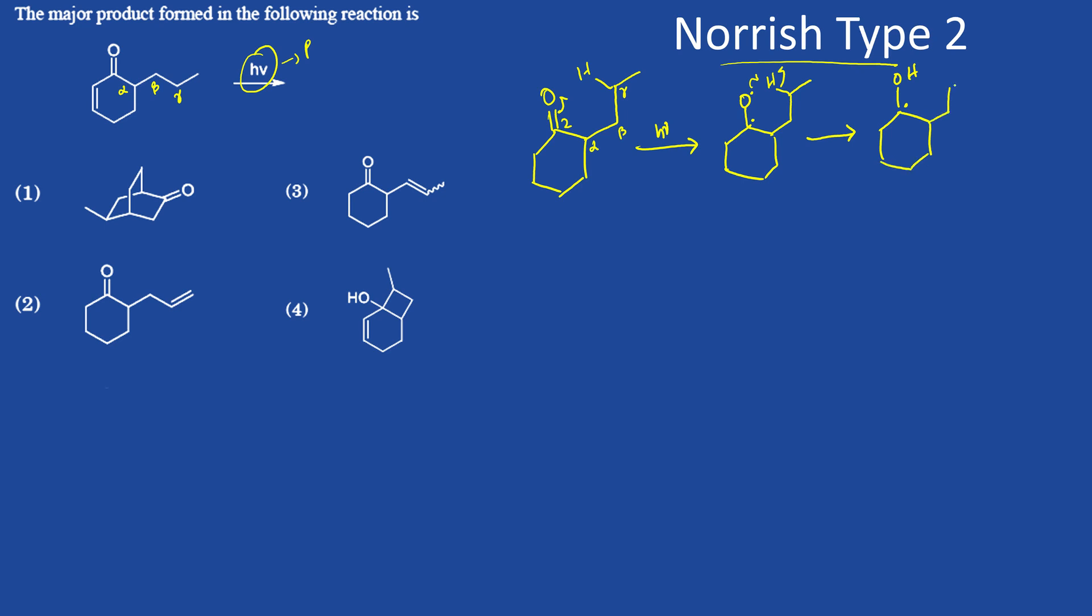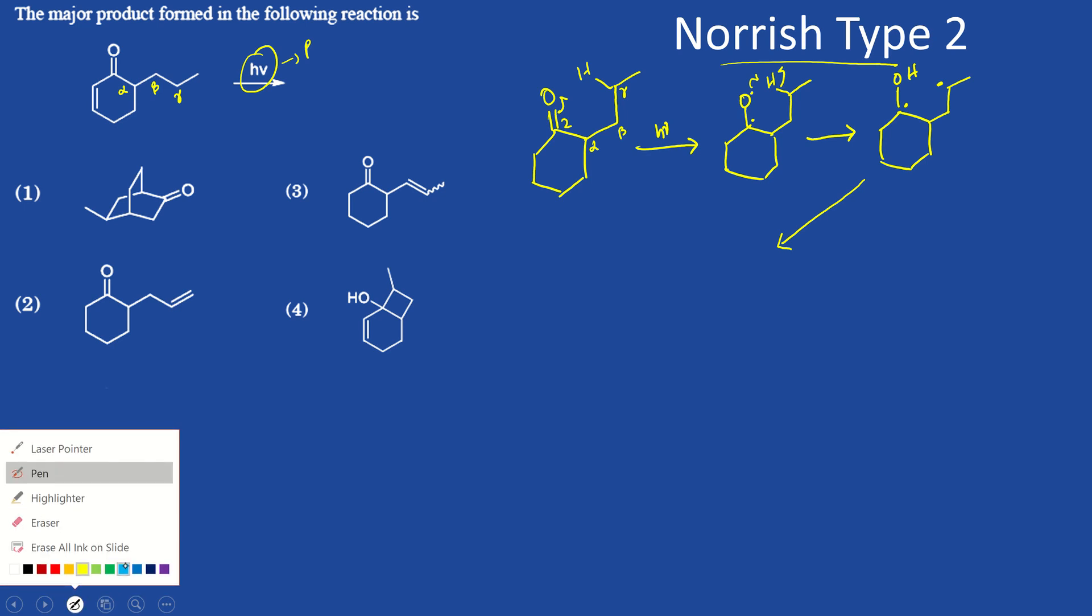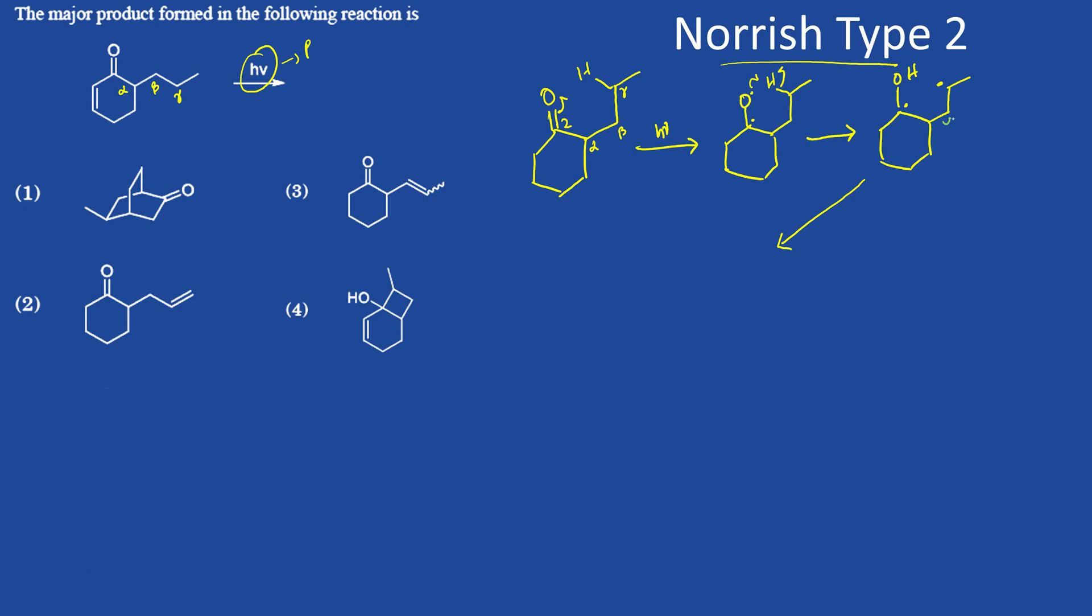Also, since hydrogen is gone, here there will be a radical and there are two possibilities. They can cleave this bond. First possibility is one of the possibility is to cleave this bond, okay, and forming a radical here. It will cleave this bond like this.